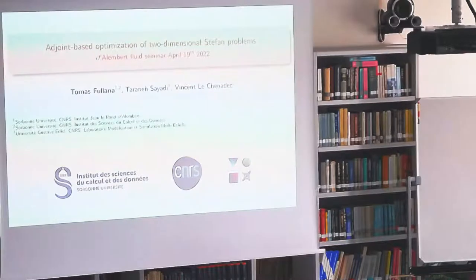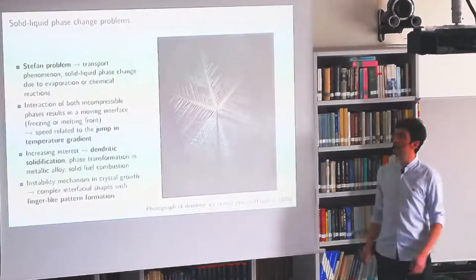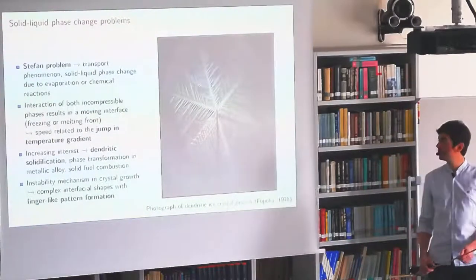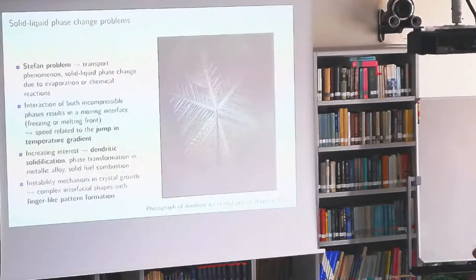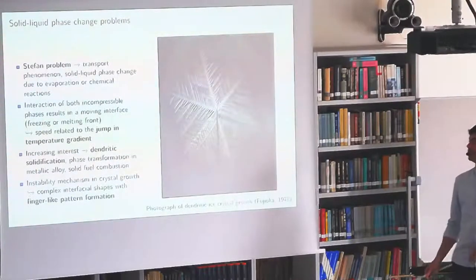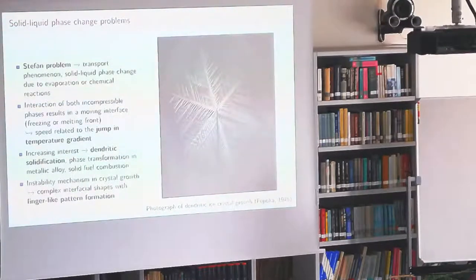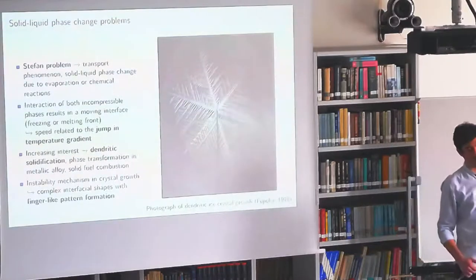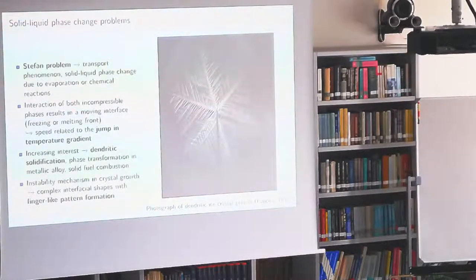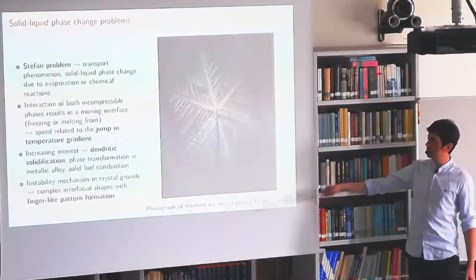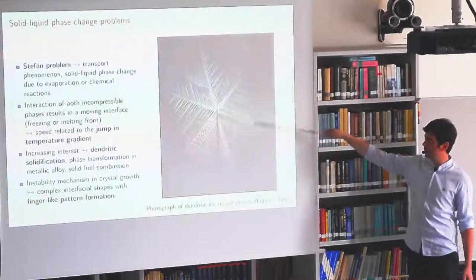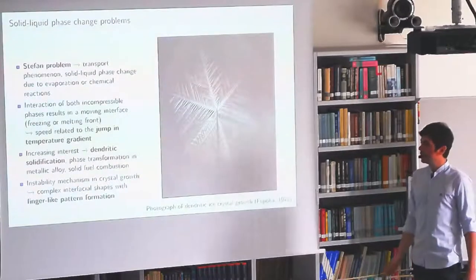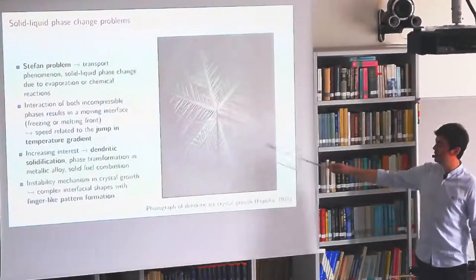We first focus on the definition of the Stefan problem, which is basically a transport phenomenon involving a solid and liquid phase change that occurs due to either evaporation or chemical reactions. It comes from the interaction of both phases, considered incompressible, and the speed of the front is related to the jump in temperature gradient. There has been increased interest in dendritic solidification, phase transformation in metallic alloys, and solid fuel combustion. Here we see a dendritic ice crystal experiment from Pujioka 1978, showing the instability with finger-like pattern formation in the side branches.